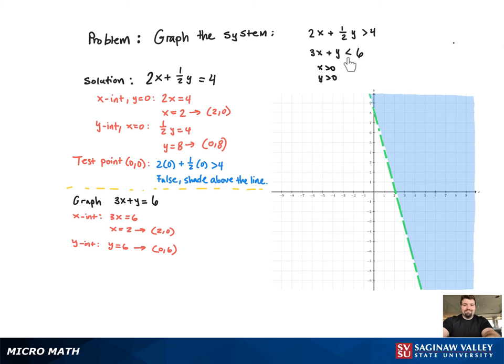Now again, we can graph the line. But since it's a less than symbol, it's a dashed line again.